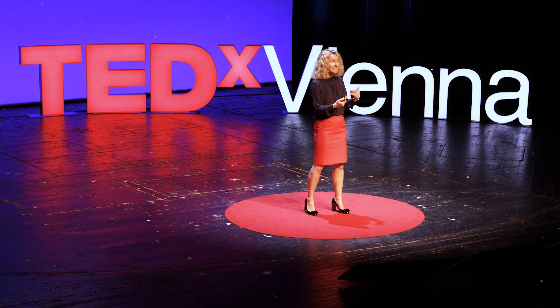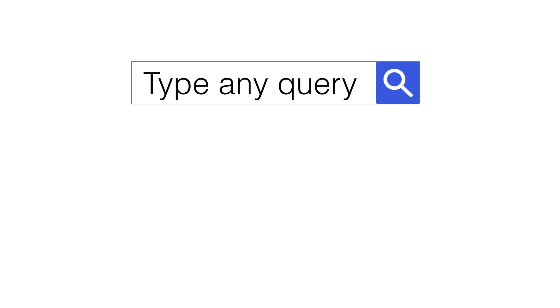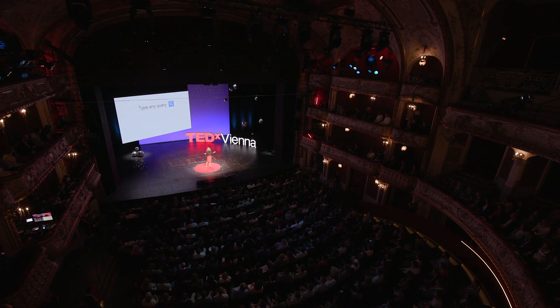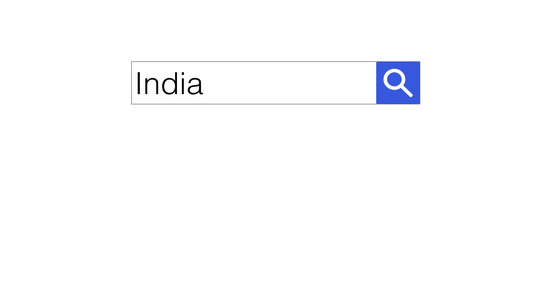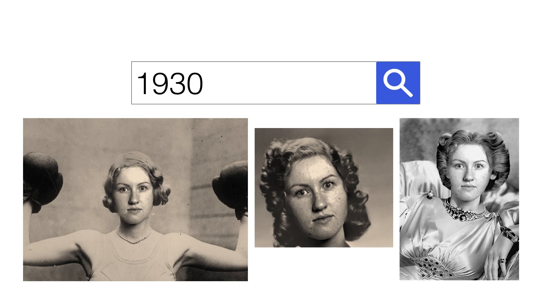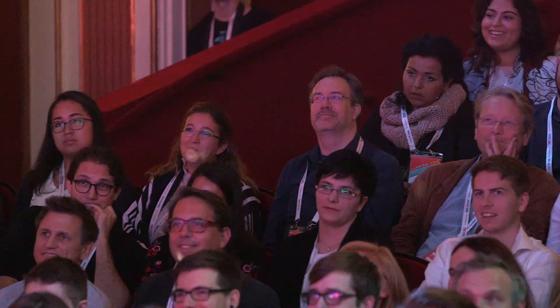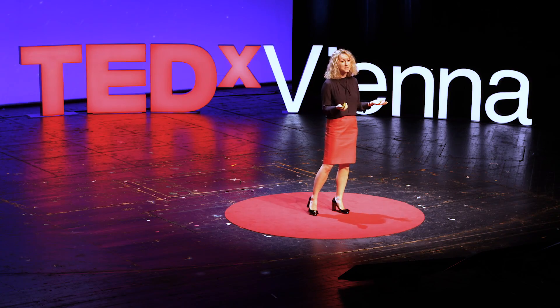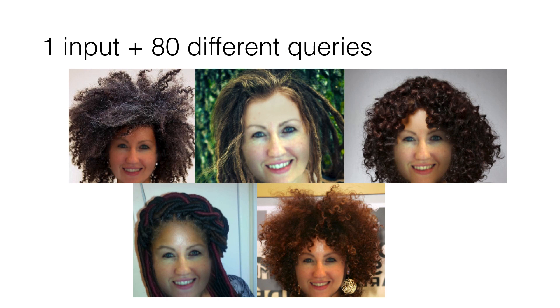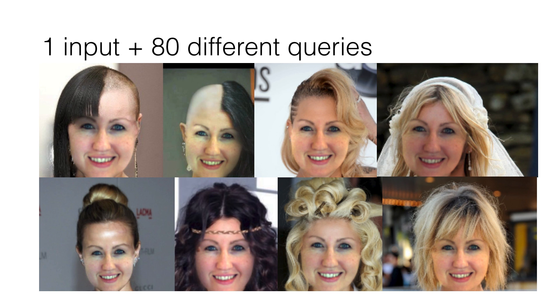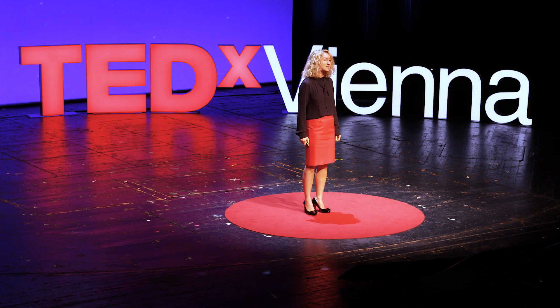In fact, I built it as a search engine where you could type anything — imagine an image search engine. So I could type India and imagine myself in Indian clothing and hair, or go back in time and type 1930 and see how I would look in the 1930s. I tried it on 80 different queries, so I could see myself with dreadlocks, different hair colors and styles, shaved hair, as a bride, and in different traditional clothing. It was a lot of fun.